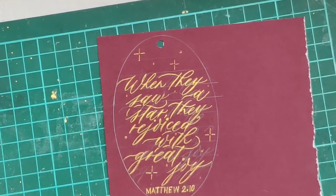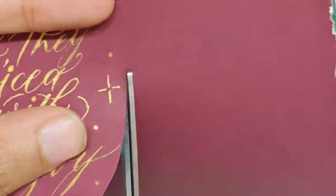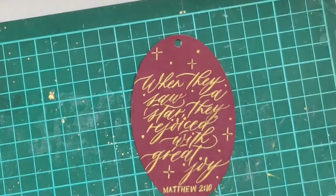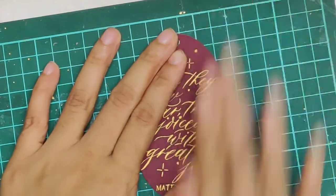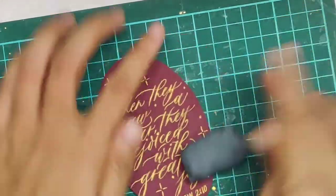After you've left the ink dry, you can erase off the guidelines and then cut the oval out like this. After that, you can erase off any extra pencil marks that may have been skipped.